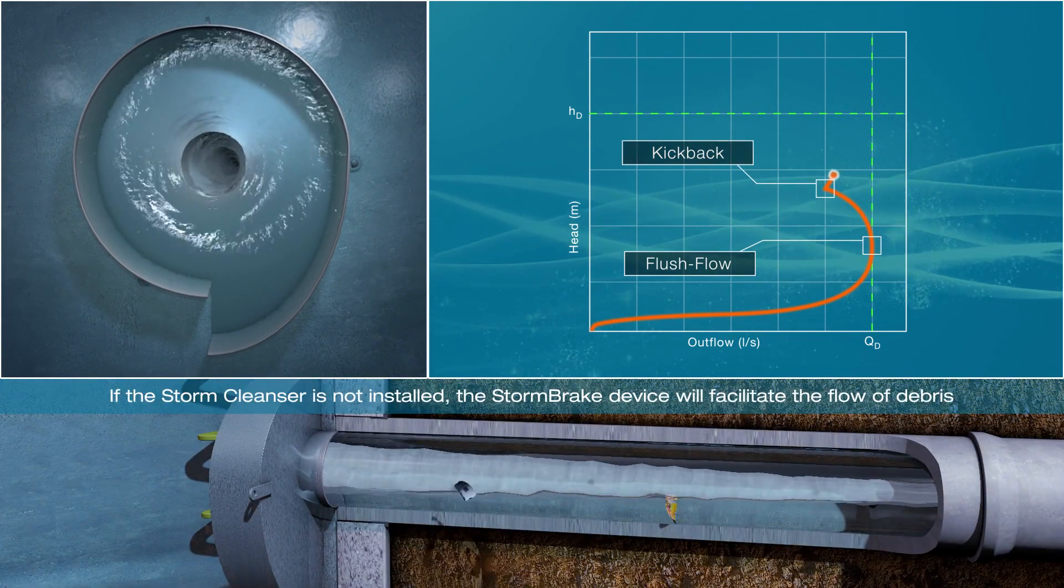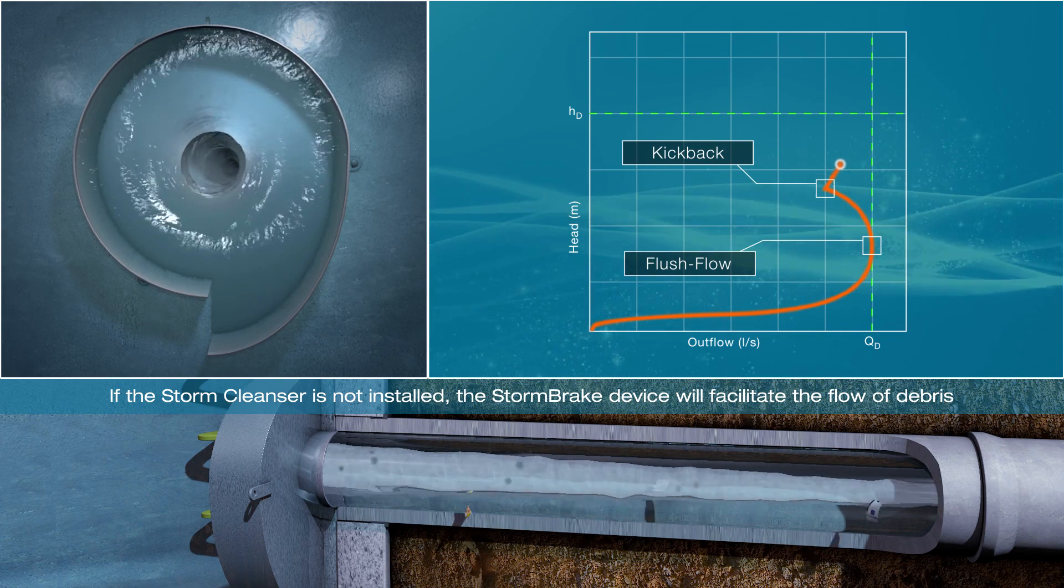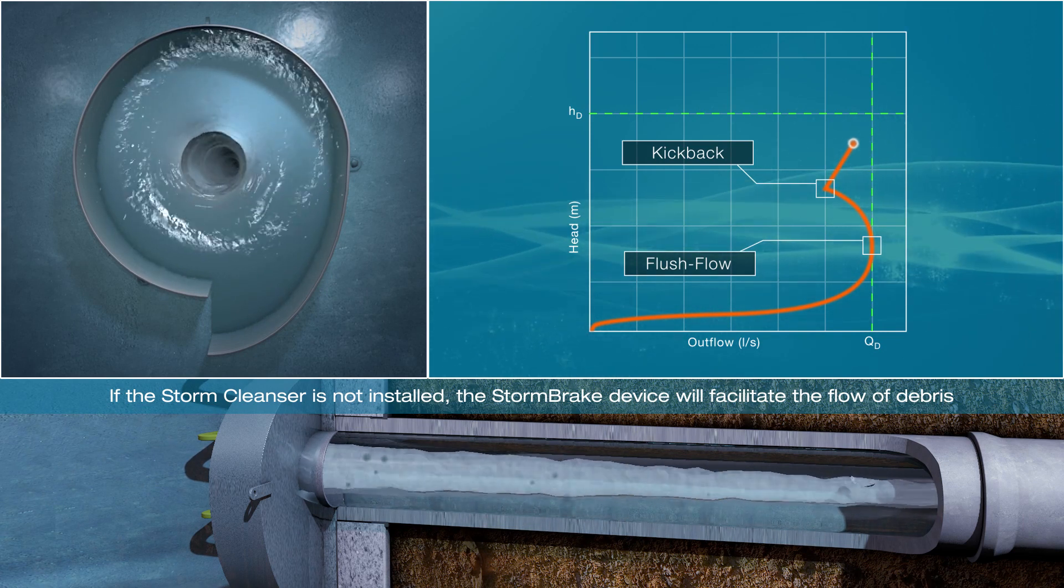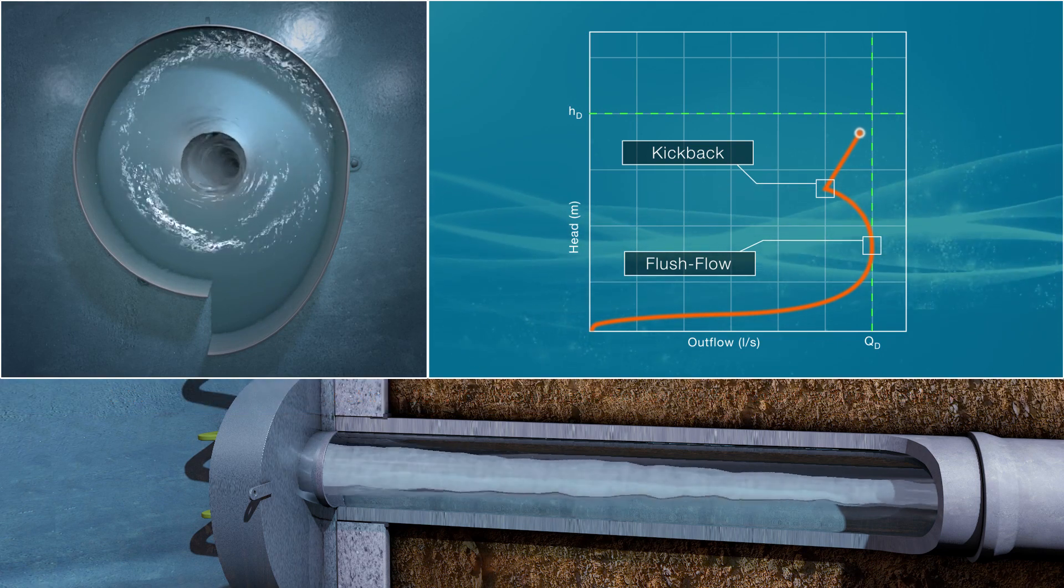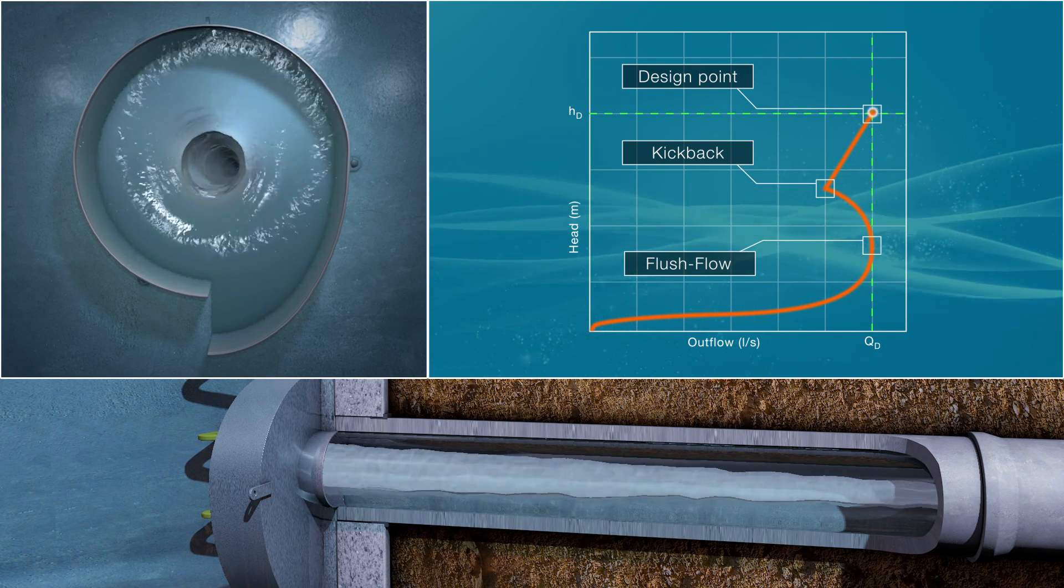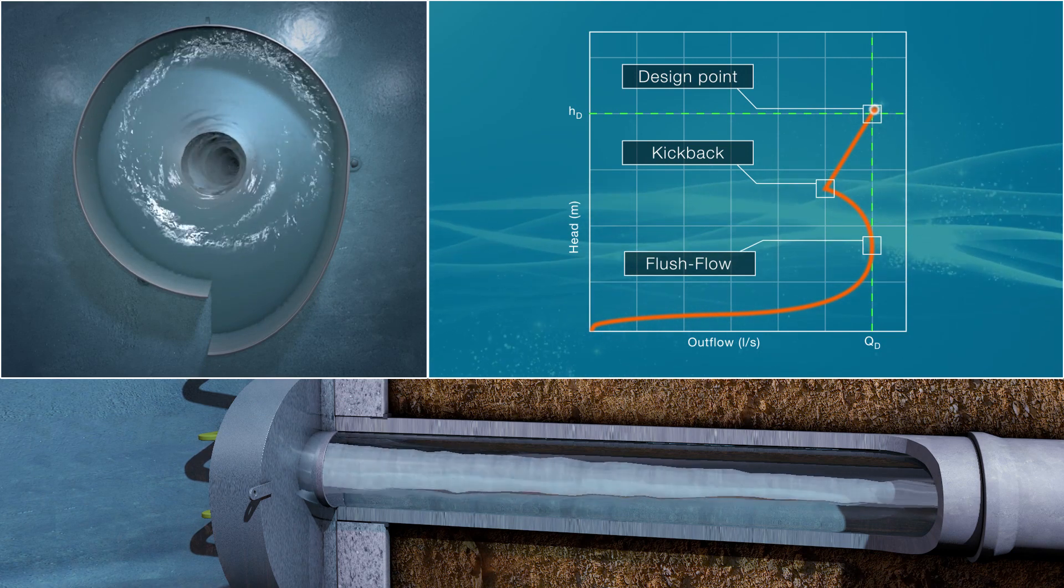The air core imposes a quasi-physical flow restriction, resulting in flow throttling without reducing the cross-sectional area for debris to pass through the device. The outflow continues to increase as the water level increases until the design point is reached.